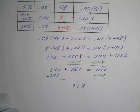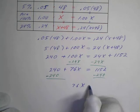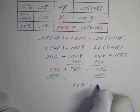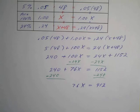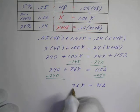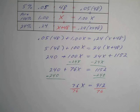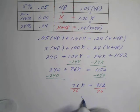And I end up with 76x. Oops, I got a room here, sorry about that. 76x equals, and if I subtract 240 from 1152 I end up with 912. I'll divide both sides by 76. And x goes in there exactly, believe it or not, 12 times.